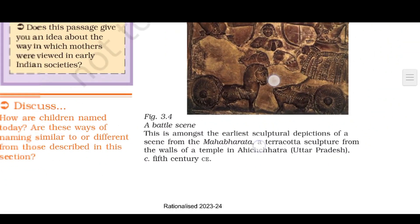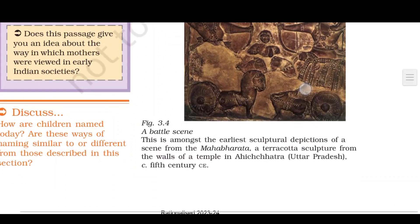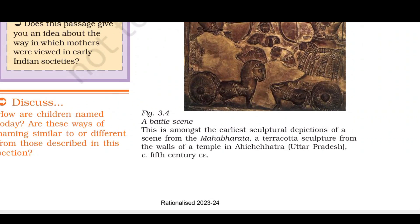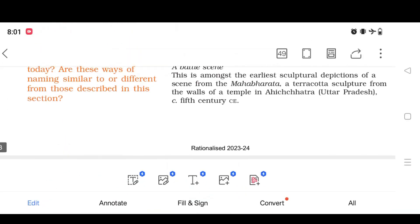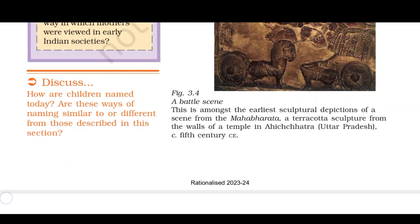With this, our second topic is completed. There is also a battle scene image — a scene from the Mahabharata. This is among the earliest sculptural depictions of a scene from the Mahabharata — a terracotta sculpture from the walls of a temple in Ahichchhatra, Uttar Pradesh, dating to the 5th century CE. We will start the next topic in the next video. Thank you and have a nice day.